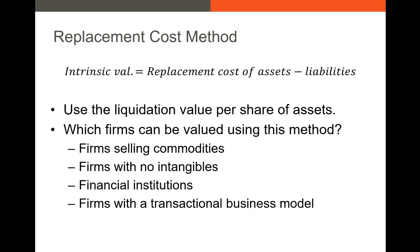So let's talk about the first method, the replacement cost method. This is actually pretty straightforward on the surface. We just take the replacement cost of all the assets — really the market value of the assets — minus the market value of the liabilities. What we're left with is the value of the firm, the intrinsic value. To get a share price, we just divide by the number of shares outstanding.